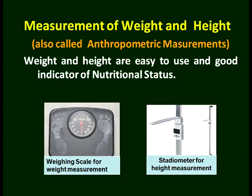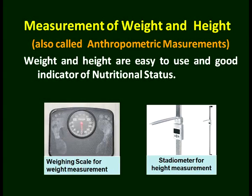Anthropometric measurements can be done anywhere — whether in a hospital, whether in a community, or even at home. There is a simple bathroom scale on which you can stand and take the weight. Another is a stadiometer for height measurement. It fixes on the wall and a flap comes on your head when you are standing, and your measurements are reflected there.